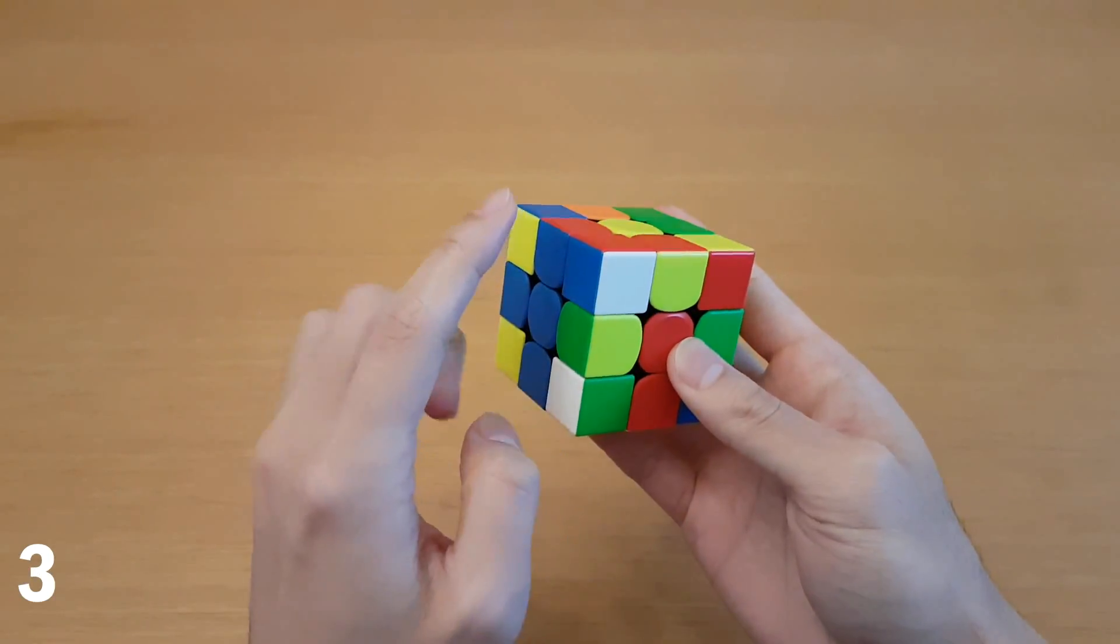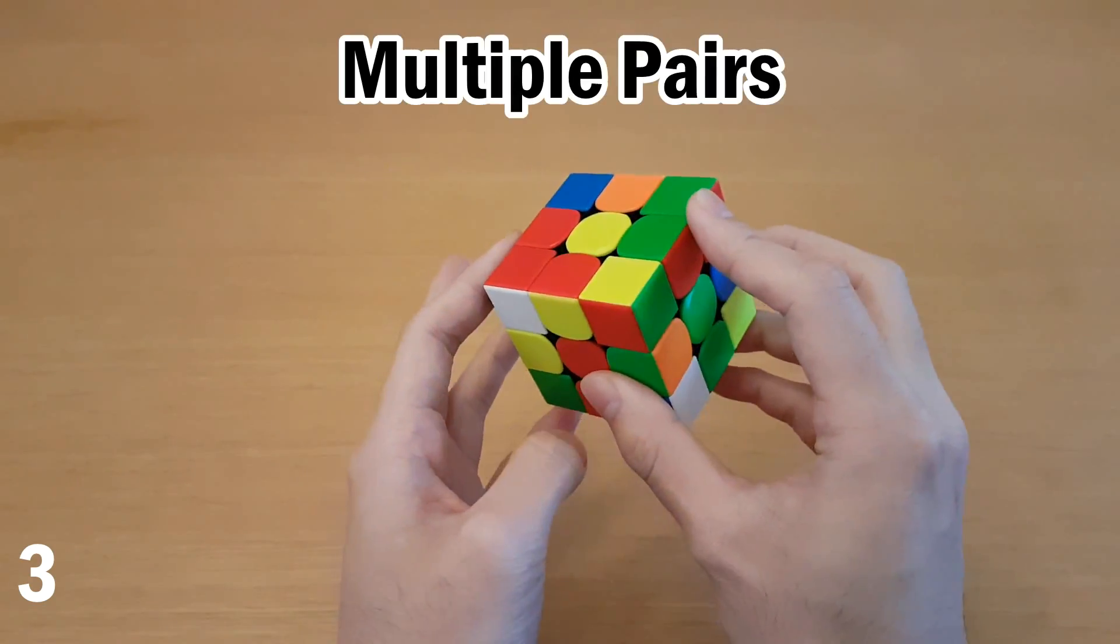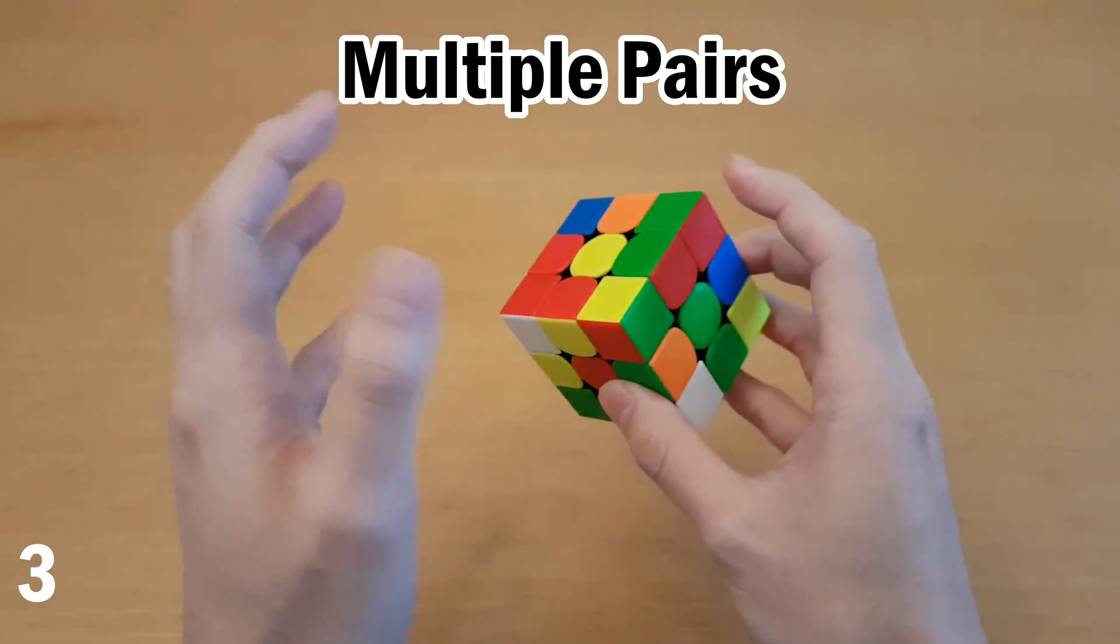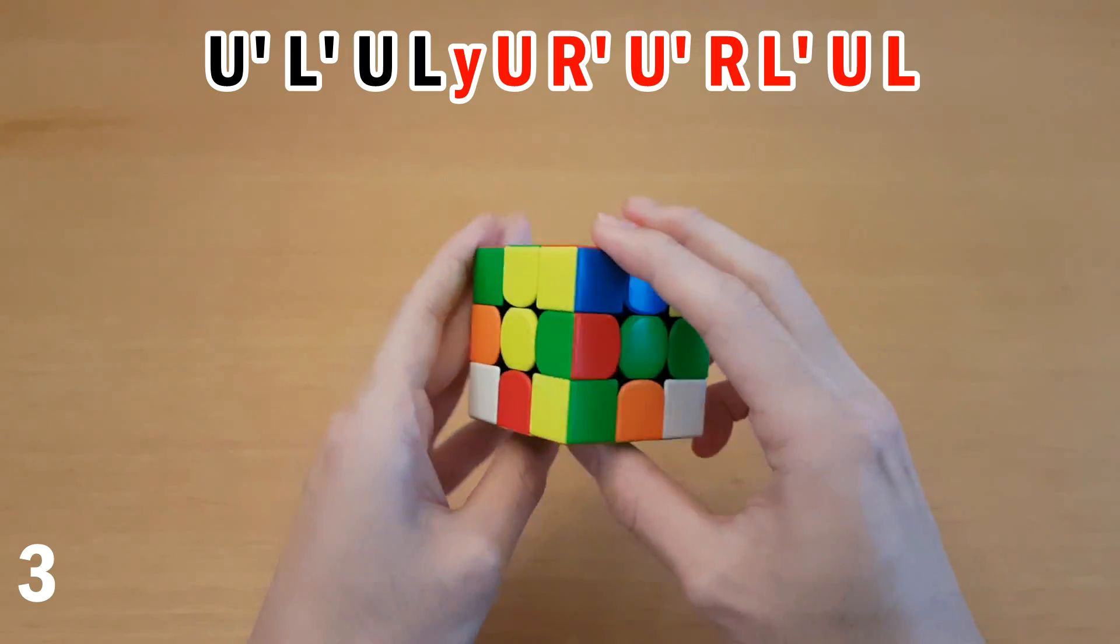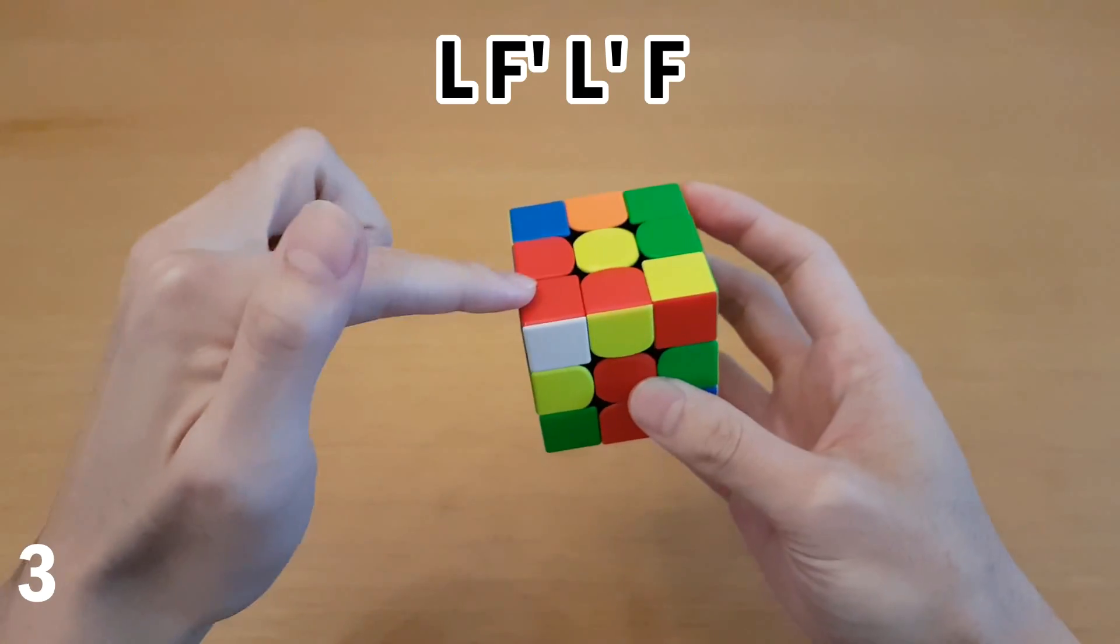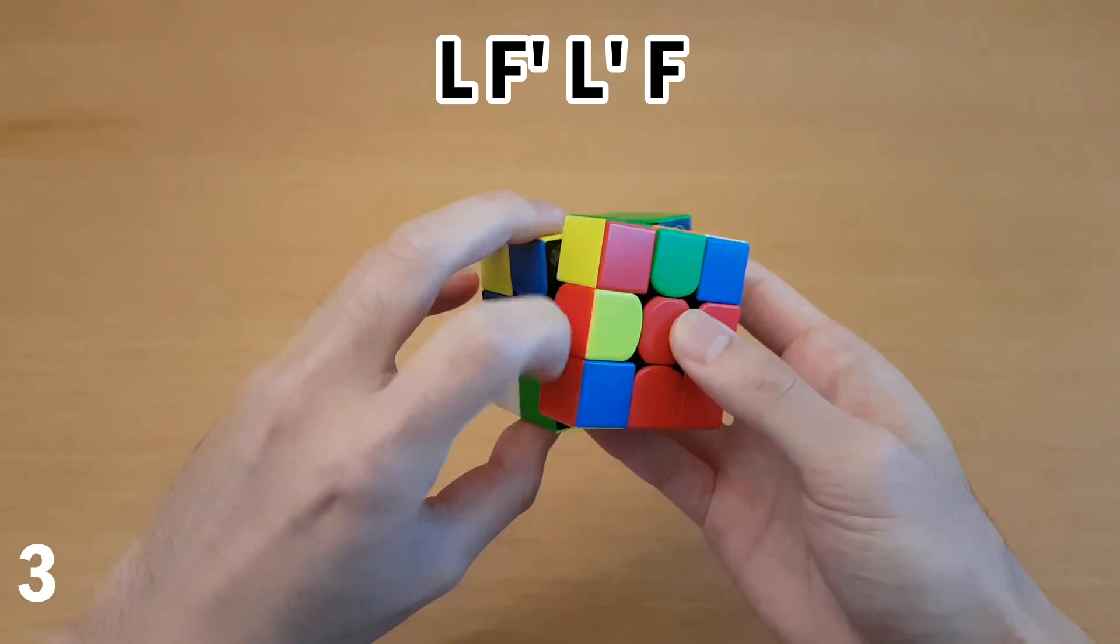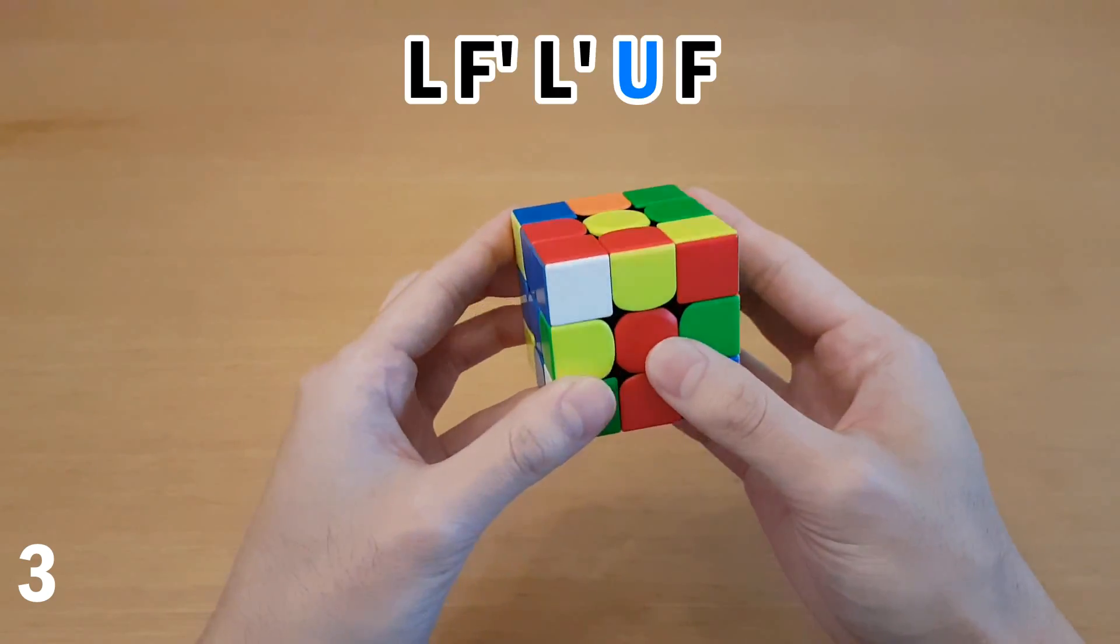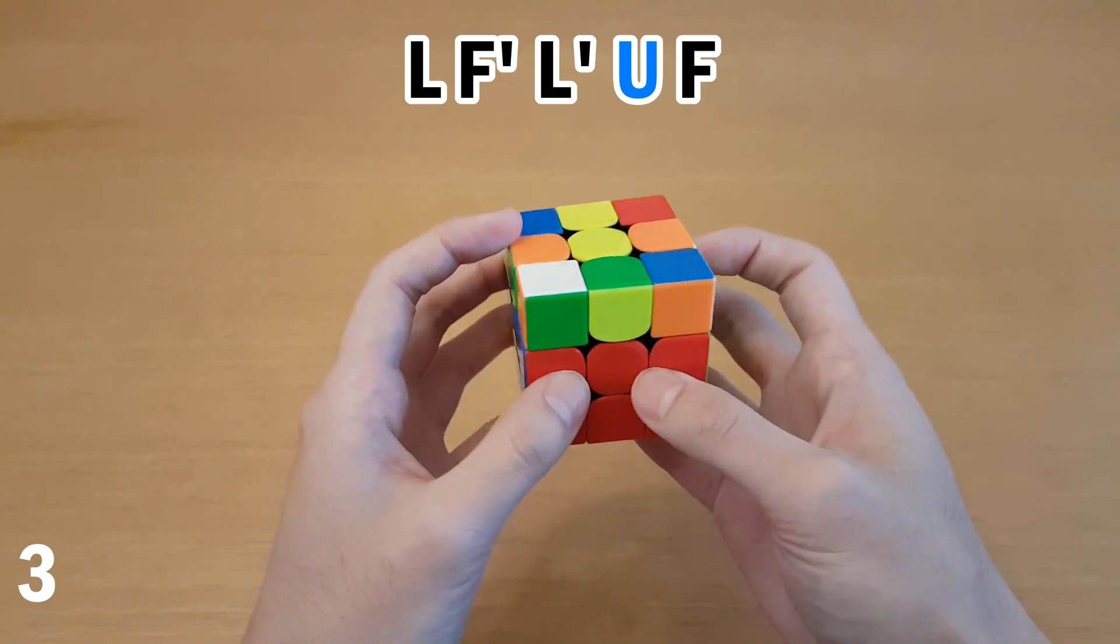You can also use the idea of inserting certain ways to influence other pieces if you notice you have multiple pairs you want to save. This is one example you may have run into where your first time running into it during a solve, you probably completely didn't know what to do and just ended up splitting one of the pairs. In a situation like this, if you sledgehammer one of the pairs, sledgehammer only affects the pieces around here, so you don't have to worry about this pair. So that would look like this. And this pair is saved. And not really the idea here, but in this specific example, you can just add one move before the last part of the sledgehammer to solve both pairs.